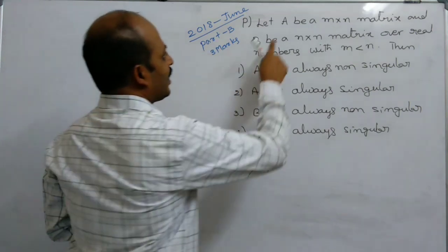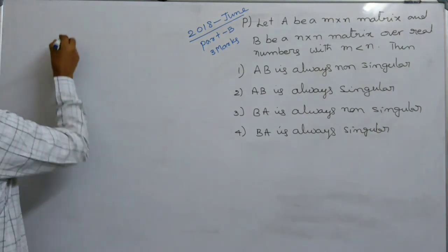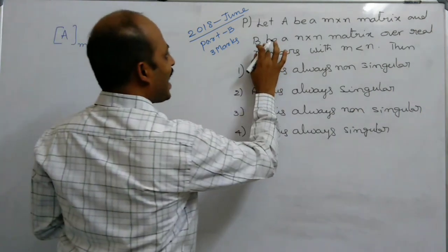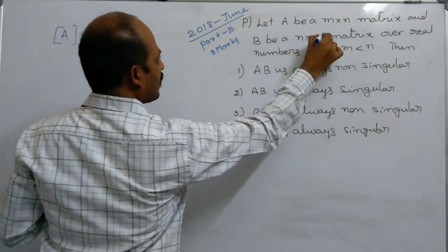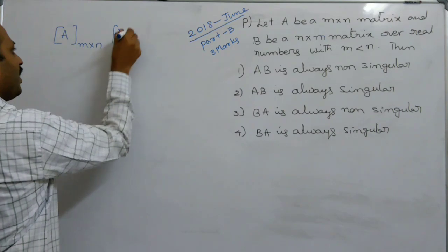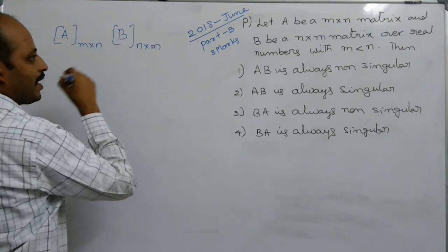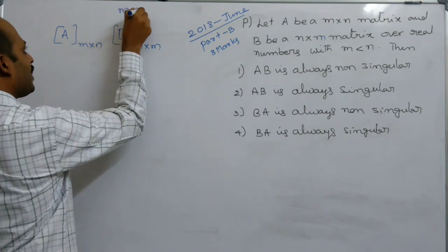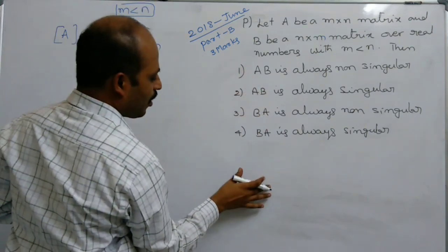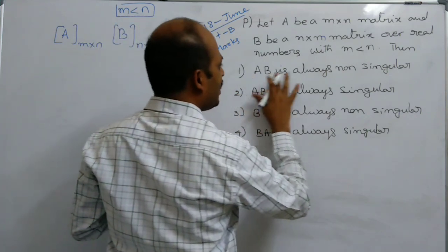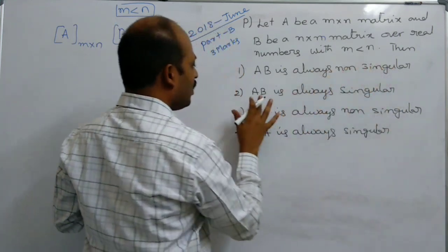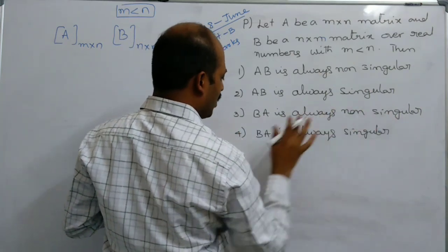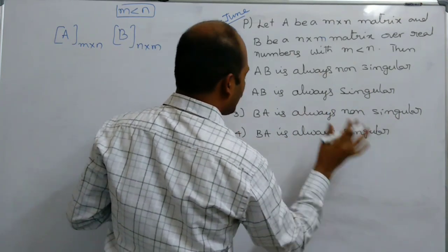Let us see the question. Capital A is an m×n matrix, capital B is an n×m matrix, with m less than n. Then which of the following conditions is true? (A) AB is always non-singular, (B) AB is always singular, (C) BA is always non-singular, (D) BA is always singular.